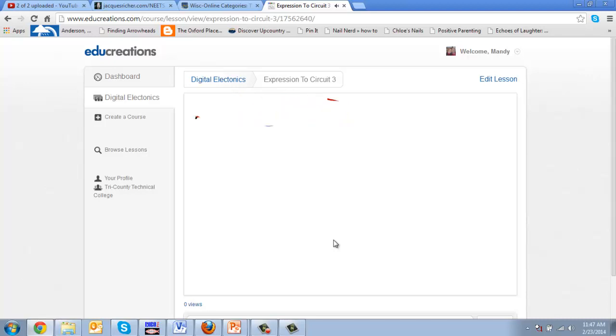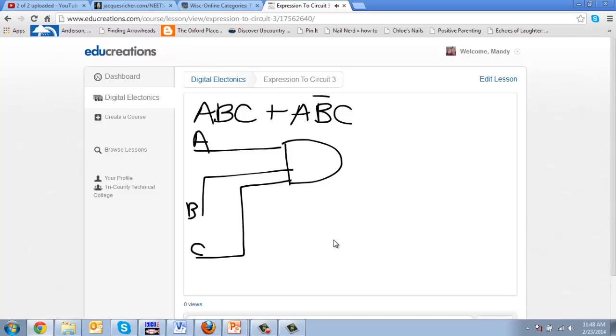So let me erase that so I can rewrite it so you can see it. I have a and b and c or a and not b and c. Let's make that, and this time let's go ahead and use three input AND gates. That'll make it a little easier. So I have a and b and c coming into that. And I'm going to label those a, b, c. And now I need to make a and not b and c.